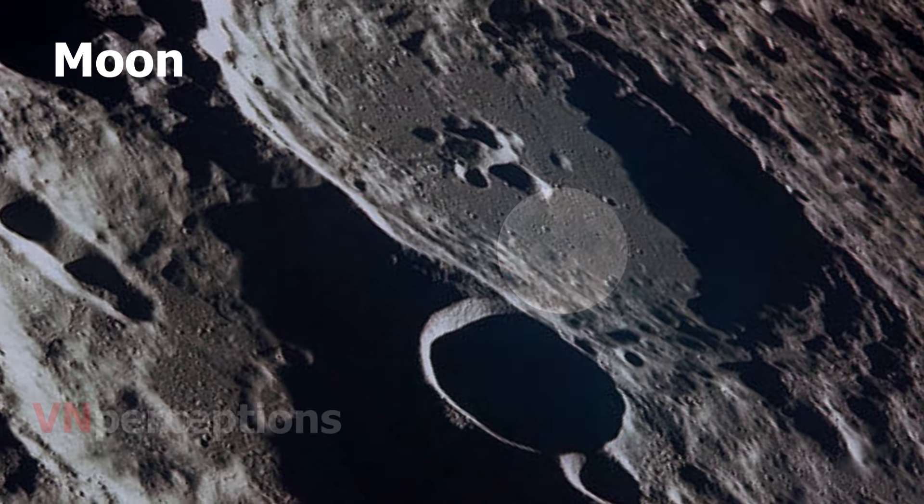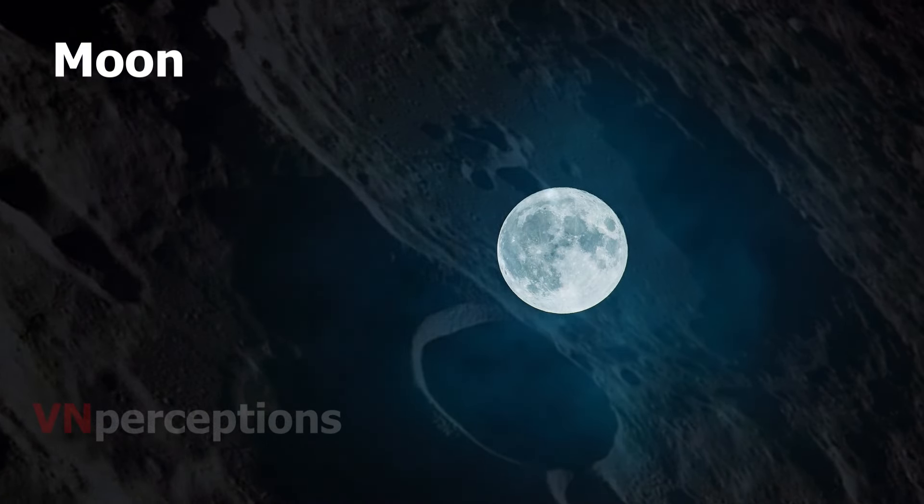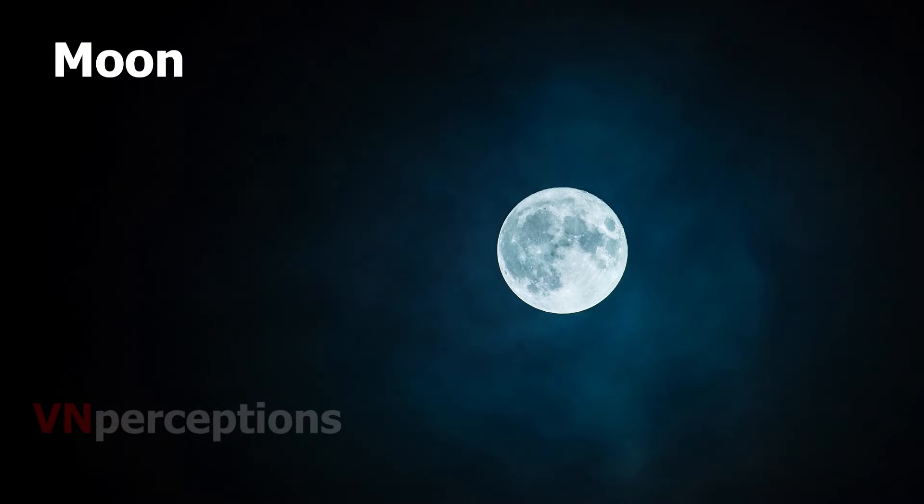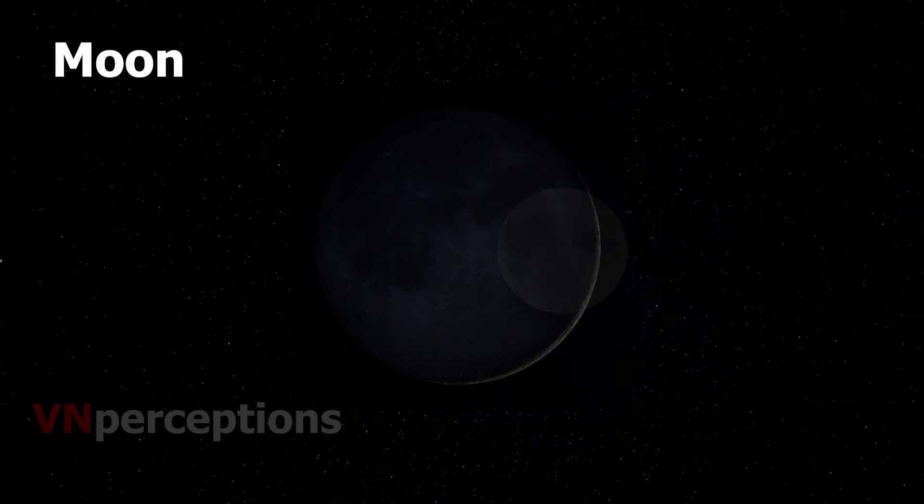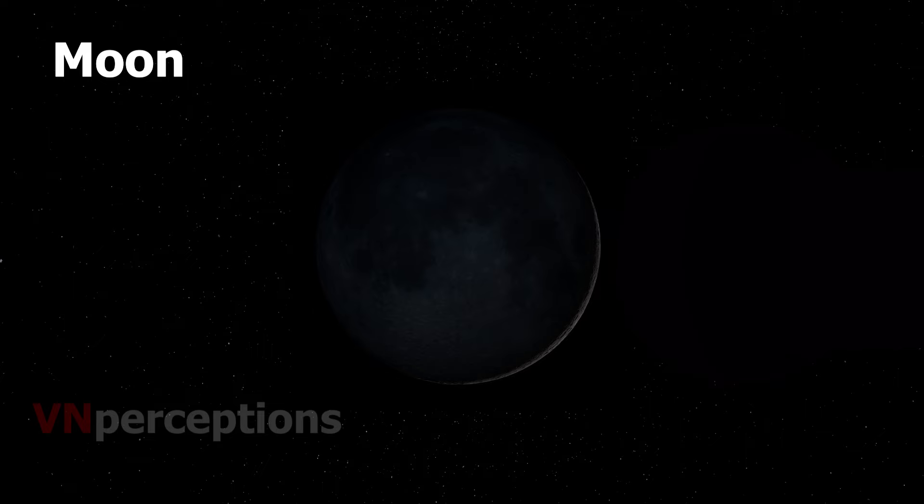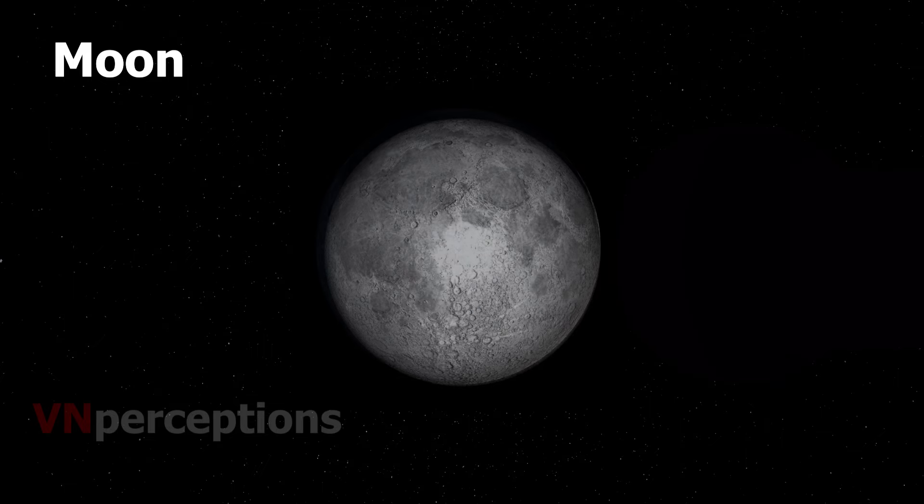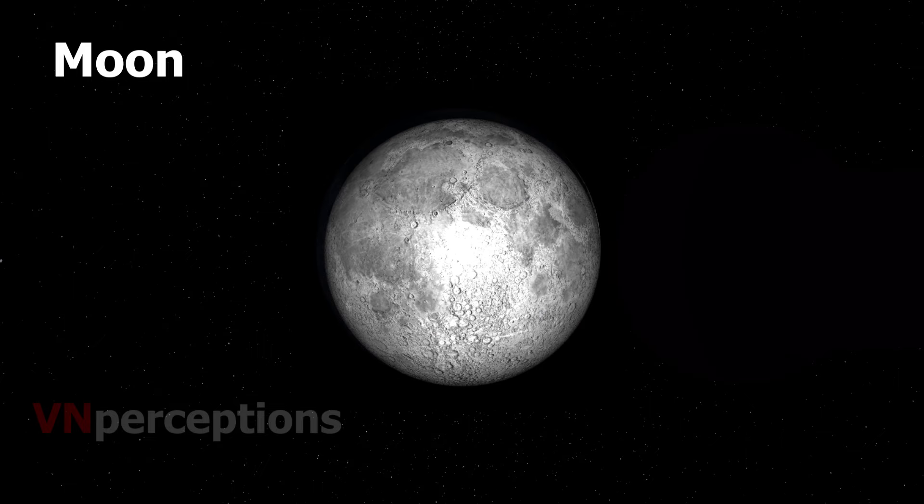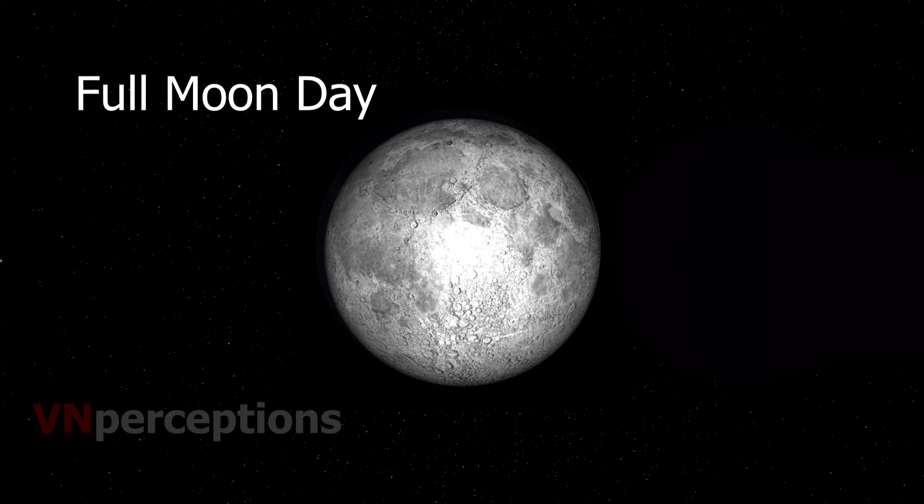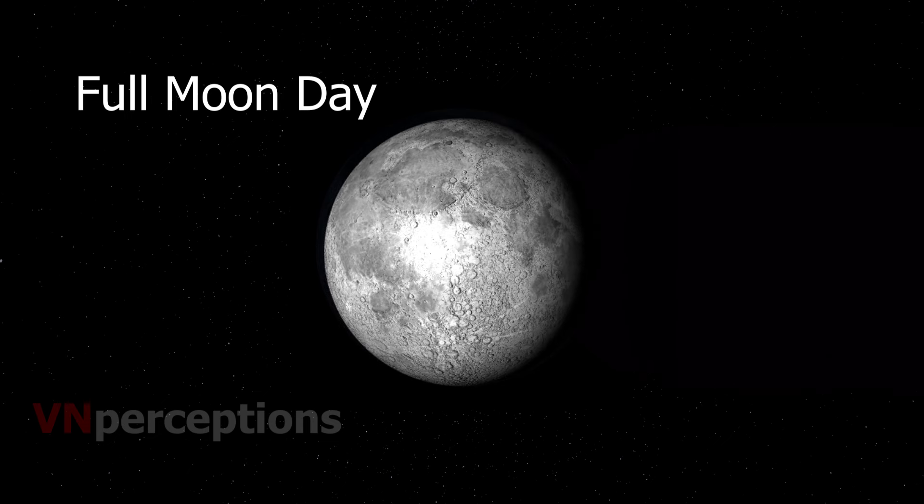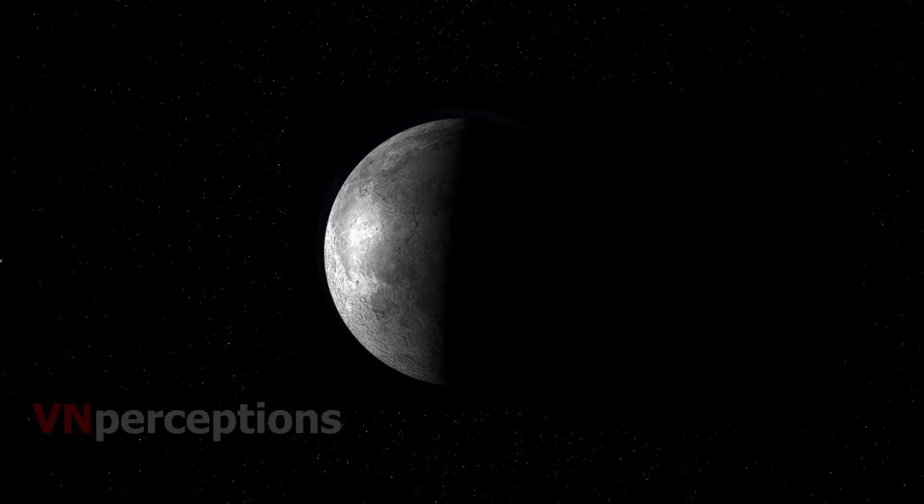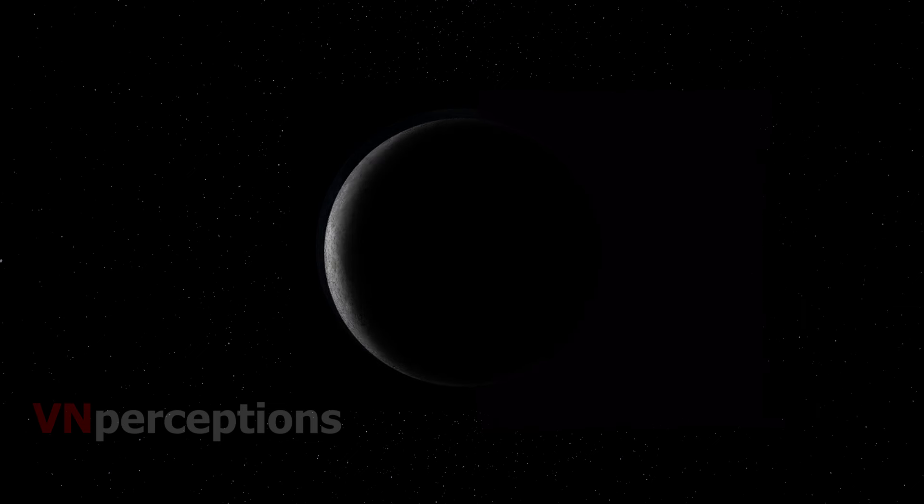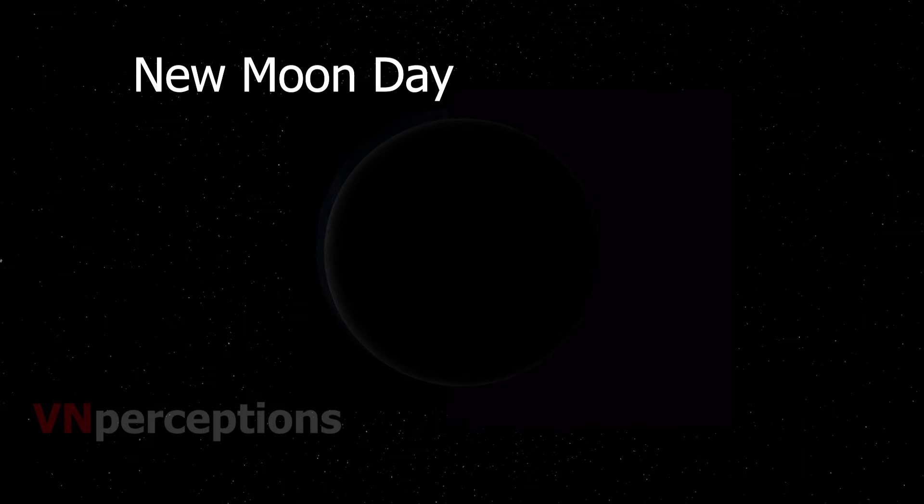There is a change in the shape of the moon every day. Sometimes the moon appears to be perfectly round and sometimes the moon cannot be seen at all even if the sky is clear. The day on which the whole disk of the moon is visible is known as full moon day. Thereafter, every night, the size of the bright part of the moon appears to become thinner and thinner. On the 15th day, the moon is not visible. This day is known as the new moon day.